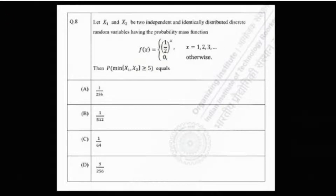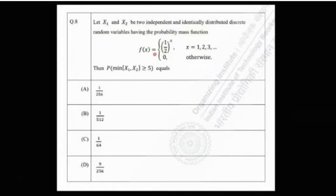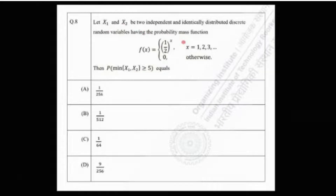Welcome to Chintha Statistics and Data Science. Today we are going to solve problem number eight from IIT JAM 2022. The problem says: let X1 and X2 be two independent and identically distributed discrete random variables having the probability mass function f(x) = (1/2)^x for x = 1, 2, 3, 4, ... and zero otherwise. We have to find the probability that the minimum of X1 and X2 is greater than or equal to 5.